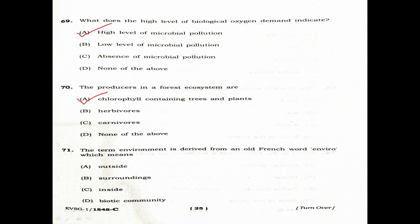Question 71: The term 'environment' is derived from an old French word 'enviro', which means surroundings. Option A: Outside. Option B: Surroundings. Option C: Inside. Option D: Biotic community. The correct answer is Option B, surroundings.